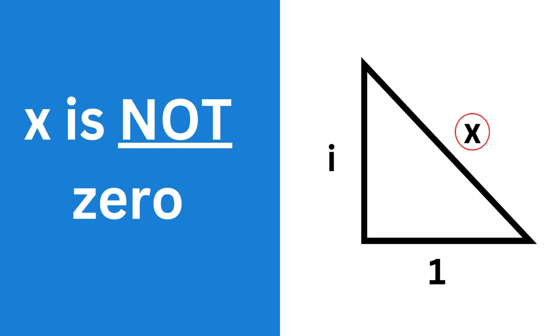You might have seen this meme on social media which claims that the long side of this triangle has a length of zero, while the other sides are not zero. But this is totally wrong, and I'll show you why.